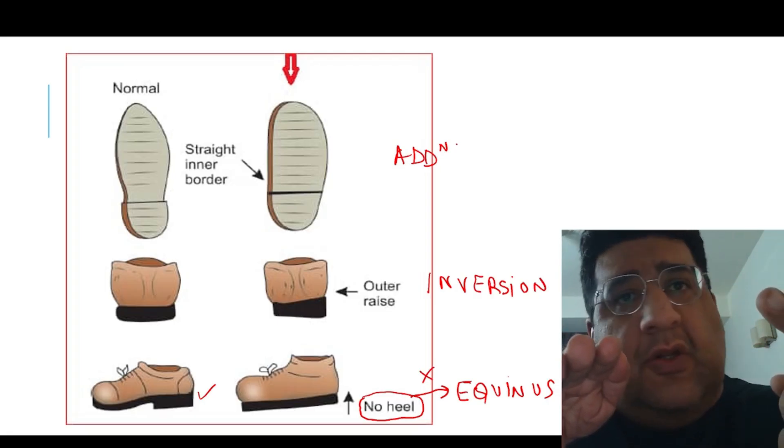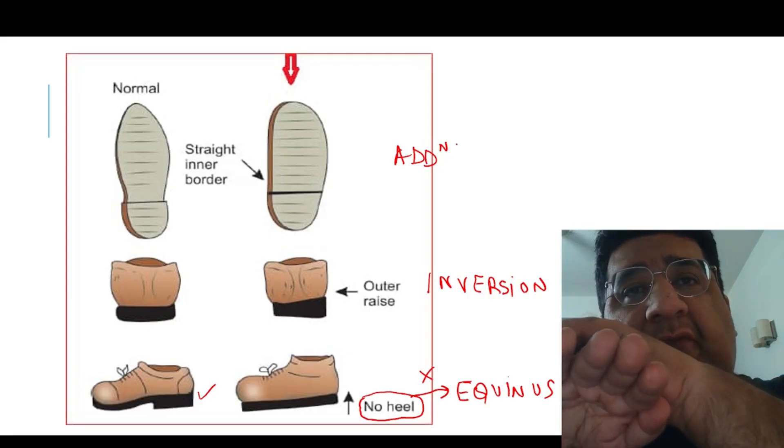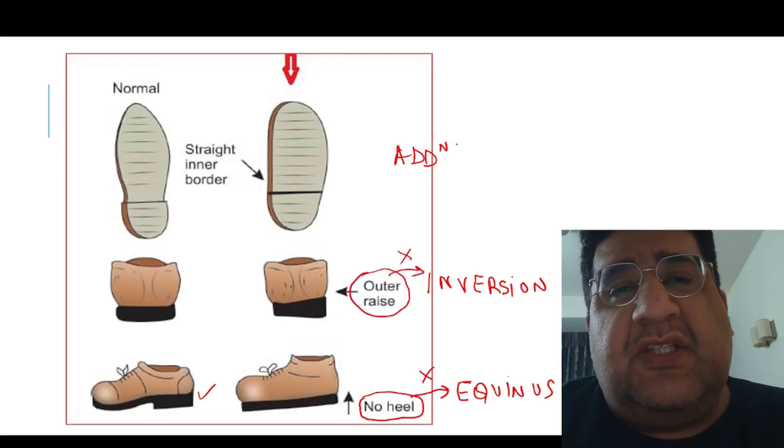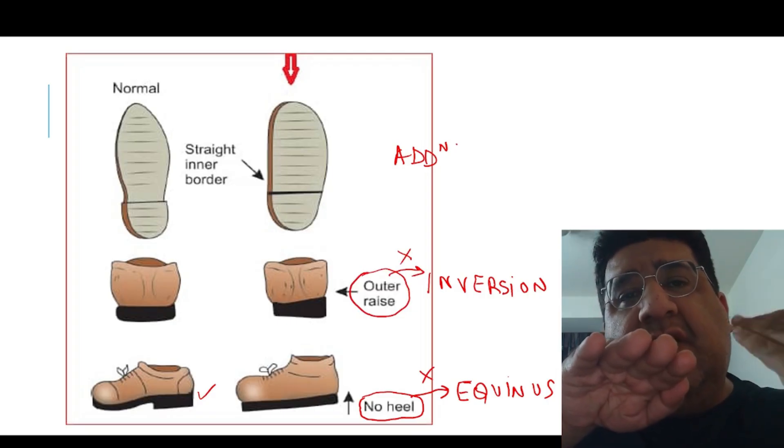So we want a slightly outer raise so that the foot lies in slight eversion. The outer raise will help counter the inversion deformity. Because of the outer raise, the foot will have a tendency to go into slight eversion, and that is what we want.